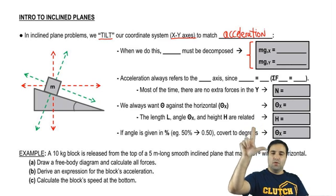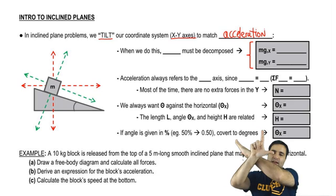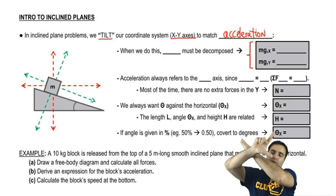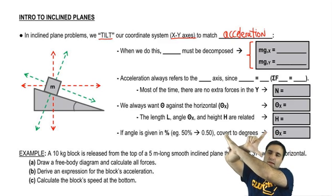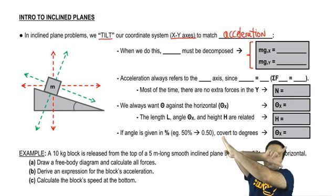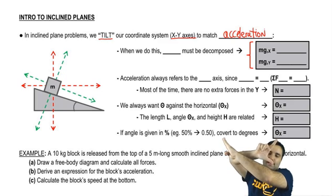Now, since we're moving at an angle, what I'm going to do is tilt the axis, and the reason I do this is so that my x axis over here matches the direction that I'm going to move or the direction of my acceleration.